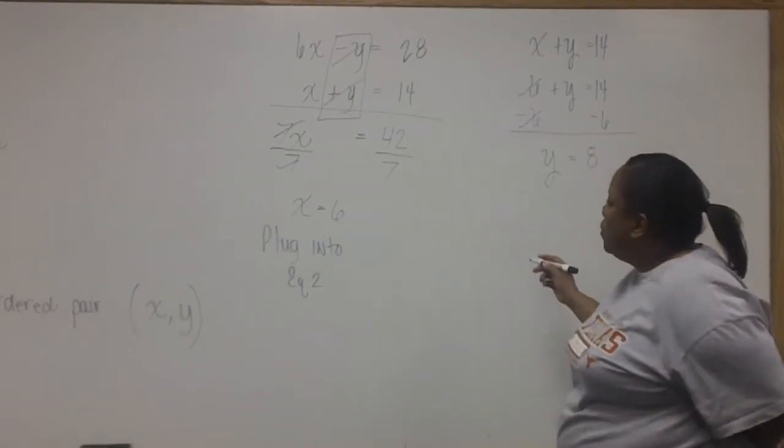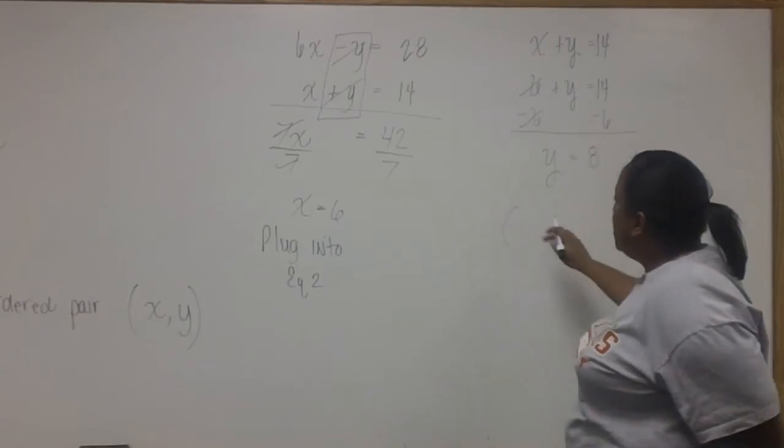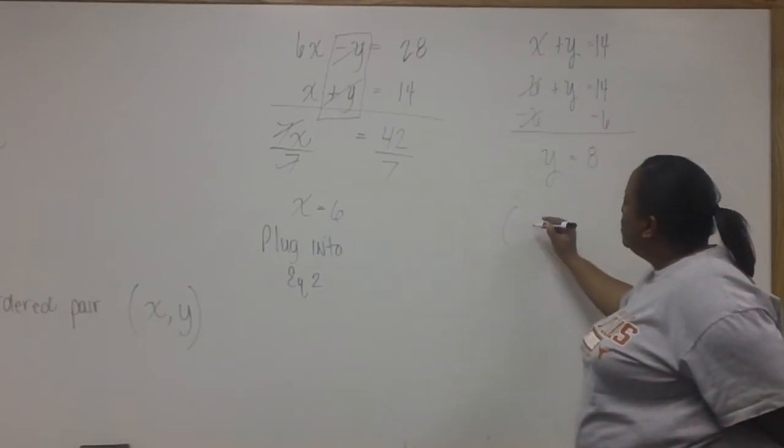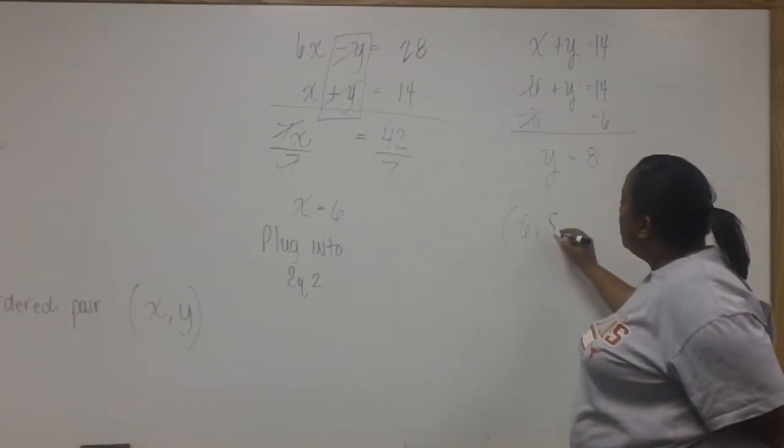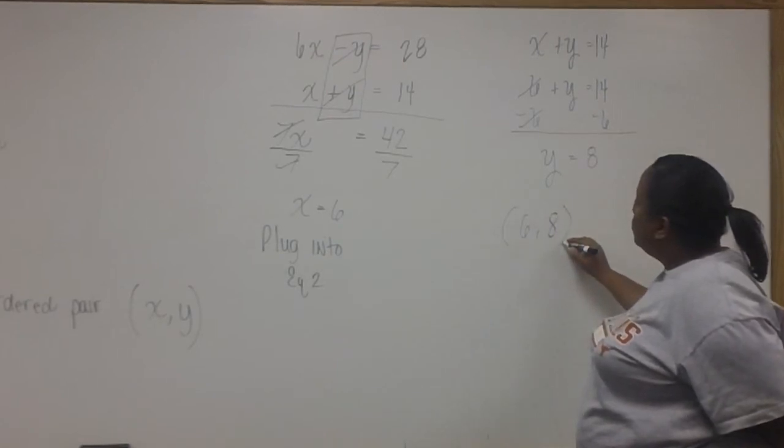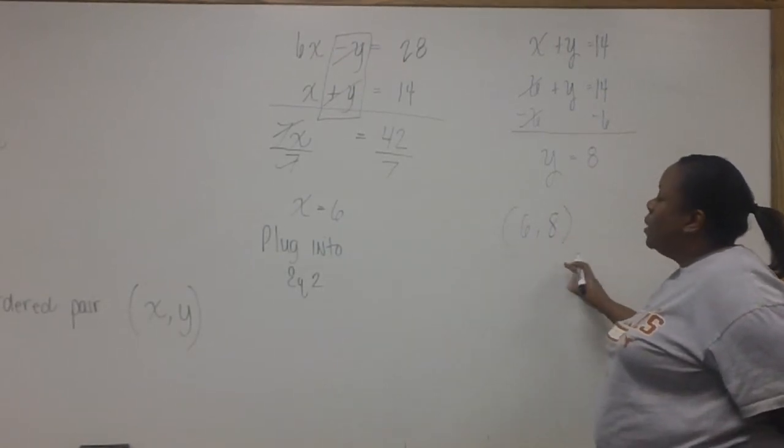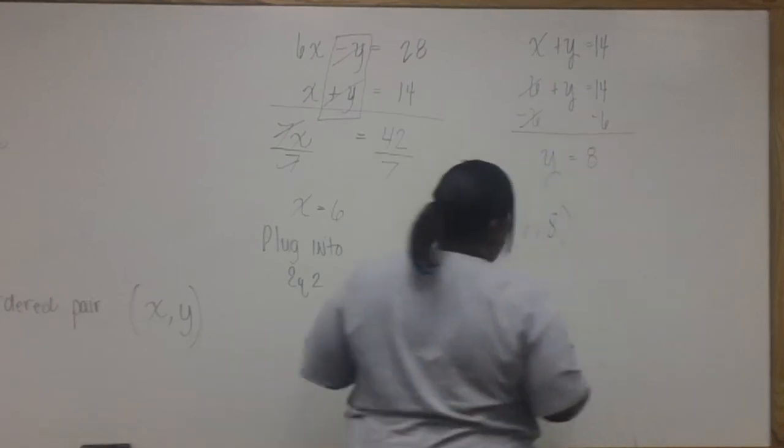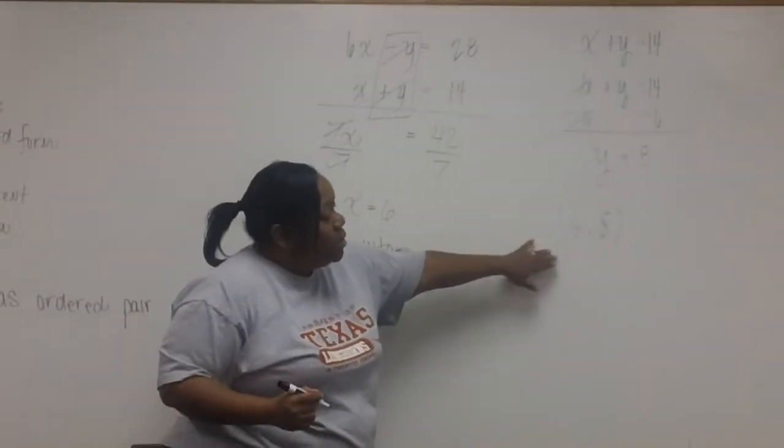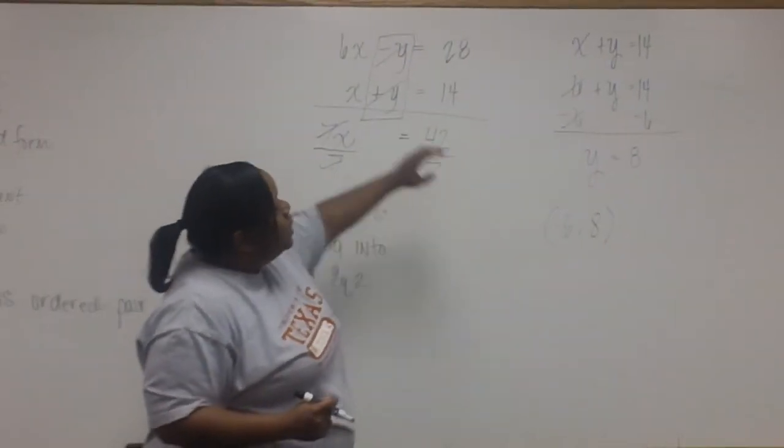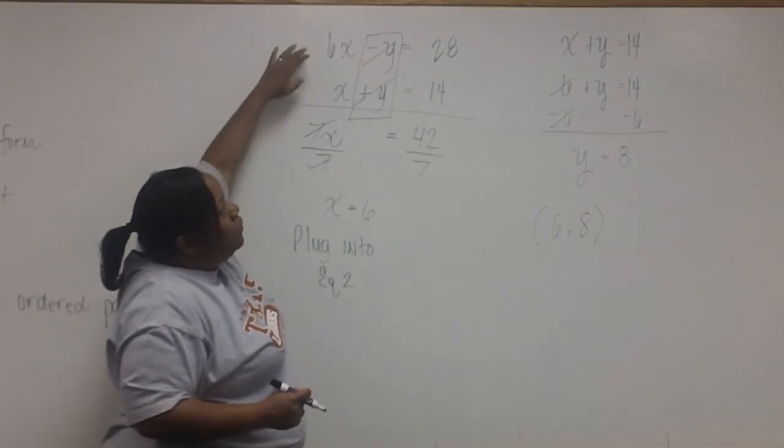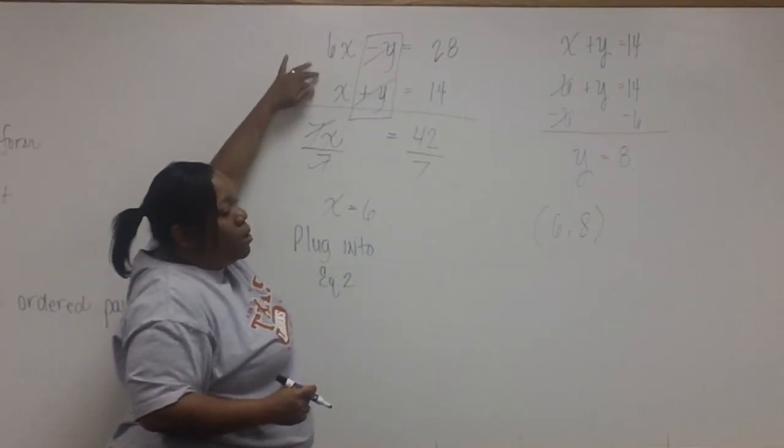So our answer, written as an ordered pair, is parentheses 6 comma 8. This is the answer. Something you might want to do is take the time to plug your coordinates back into both equations. If you come up with a true statement for both, that means that your answer is correct.